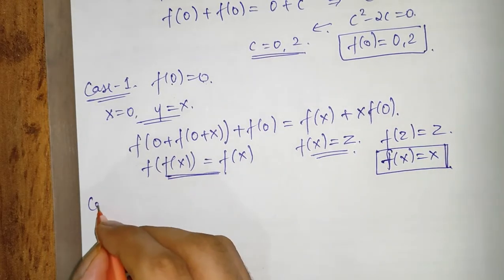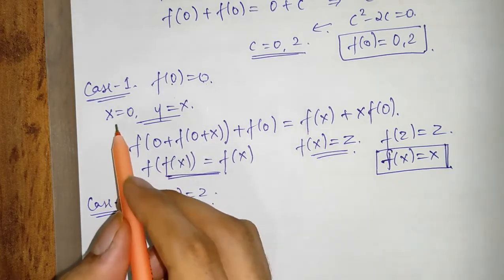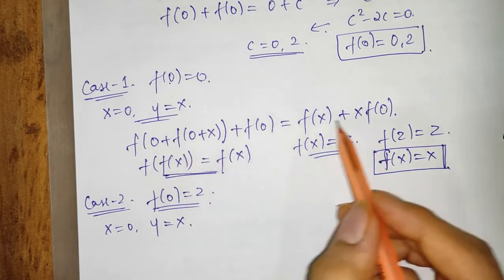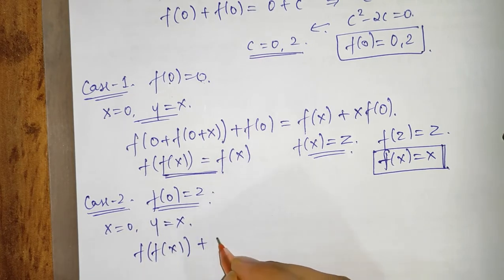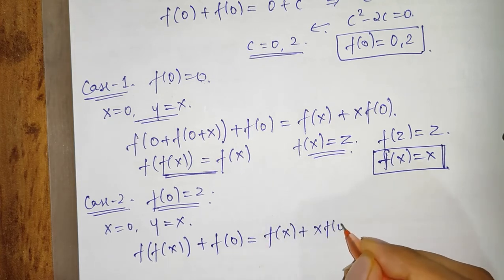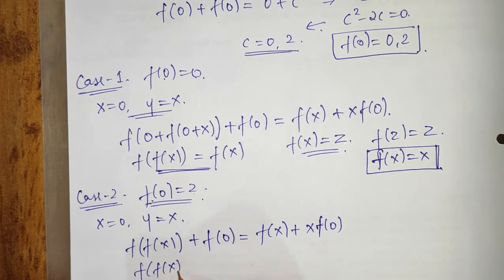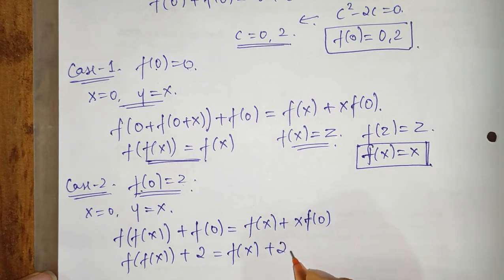Case 2: f(0) = 2. Again substituting x = 0 and y = x, we get the same intermediate equation: f(f(x)) + f(0) = f(x) + x·f(0). With f(0) = 2, this becomes f(f(x) + 2) = f(x) + 2x.